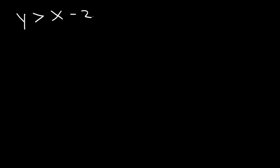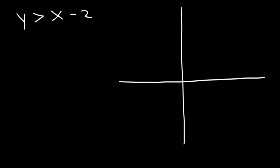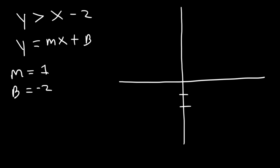Now what if we have an equation with two variables? Let's say that y is greater than x minus 2. This equation is in slope-intercept form. The number in front of x is the slope — if there's no number, it's 1. The constant on the outside is the y-intercept, which is negative 2. Plot the y-intercept first, then use the slope to find the next point. If the slope is 1, that means rise over run is 1 over 1 — go up 1, travel 1 to the right. Because it's greater than but not equal to, we're going to draw a dashed line through these points.